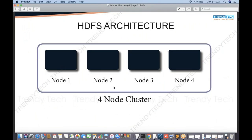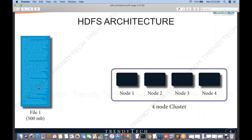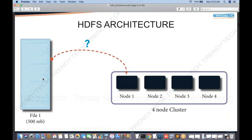This group of nodes together is called a cluster. We can have a thousand nodes, but in this case we have four. Now consider you have a four-node cluster and a very big file — for ease of calculations, let's say this file is 500 MB. On which node do you want to store this file? Is it okay to give the entire file to node 1?